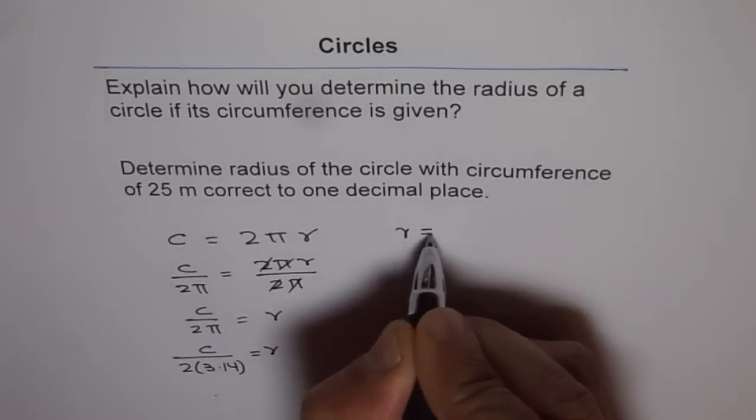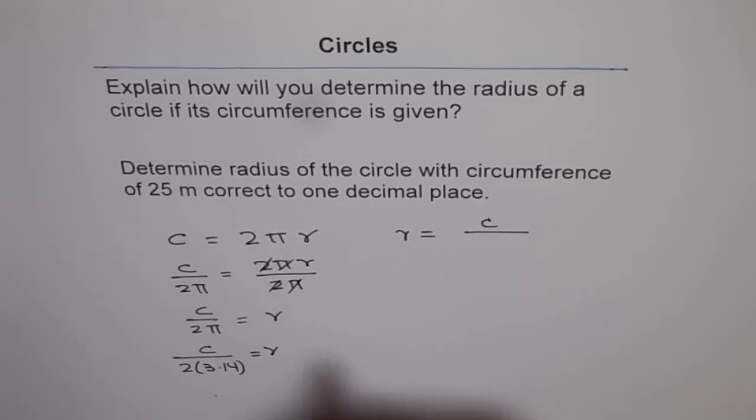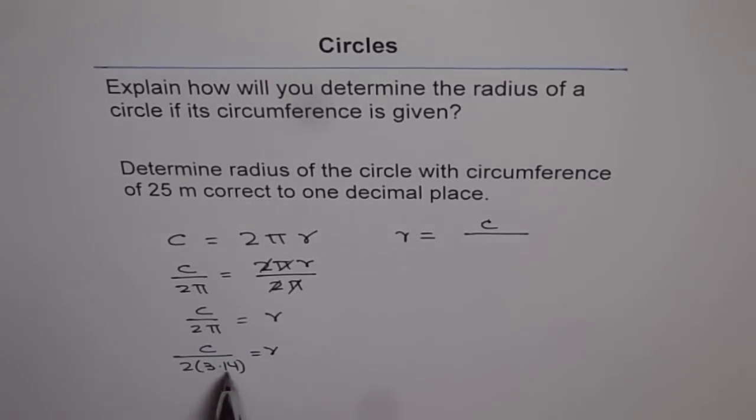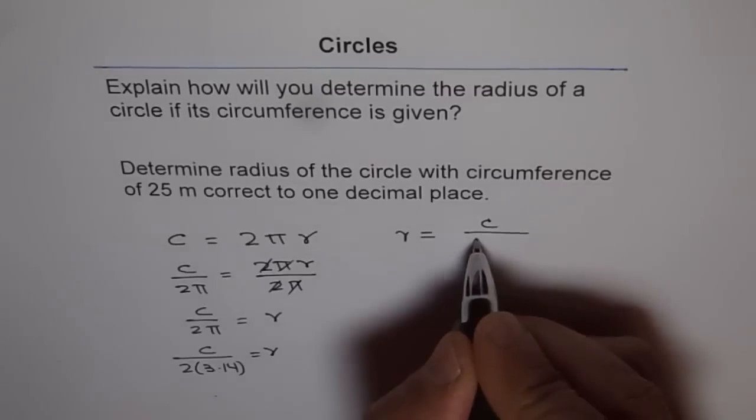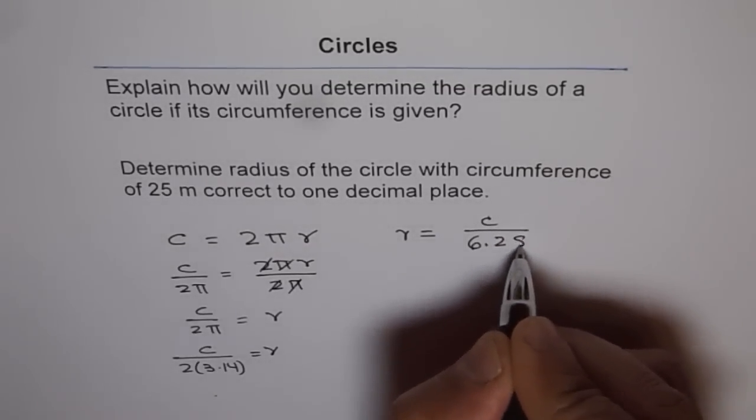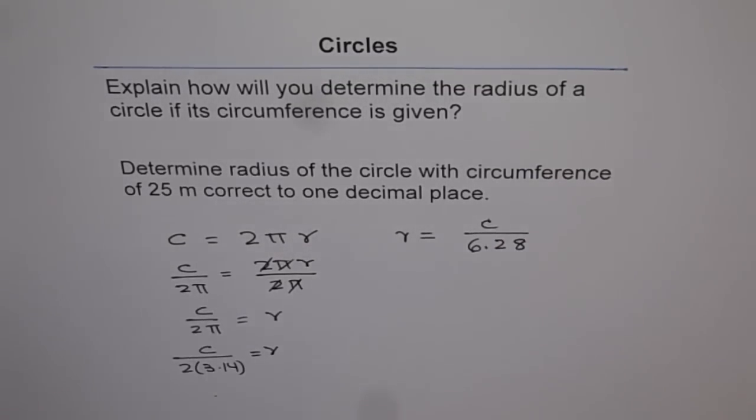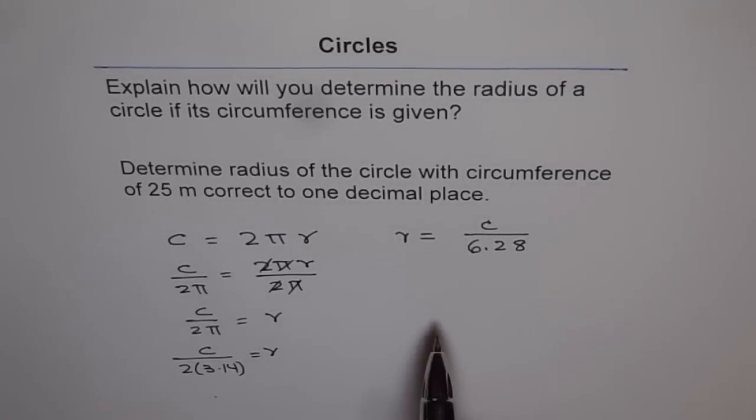Let me write it here once again. Radius is circumference divided by 2 times 3.14, which is 6.28. So that is the relation between circumference and radius.